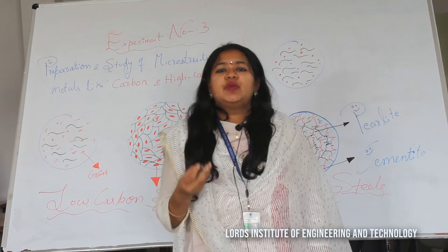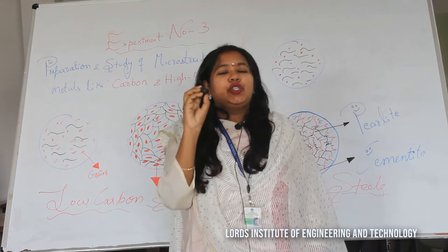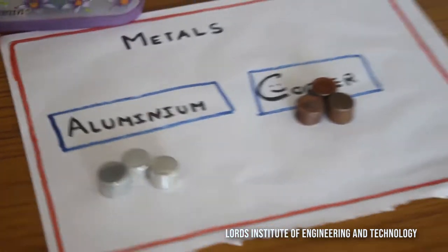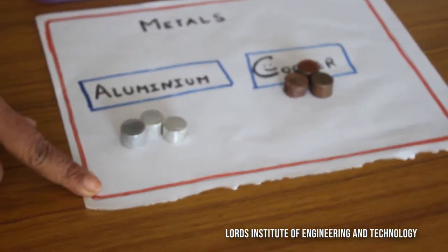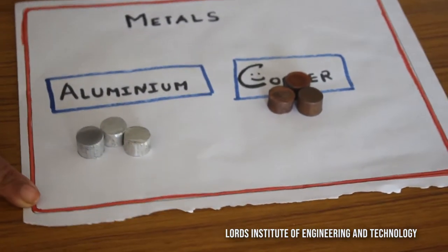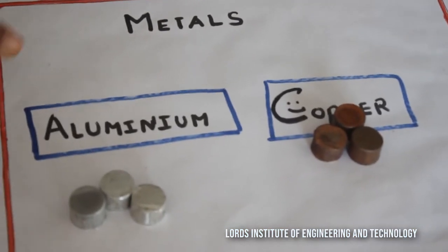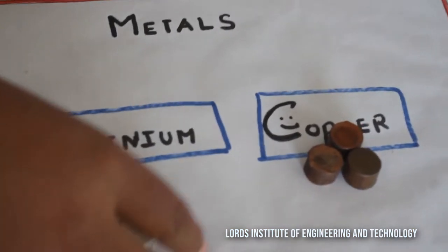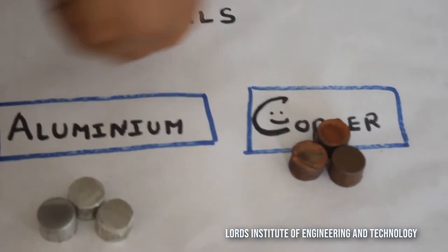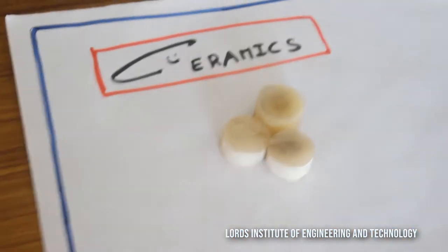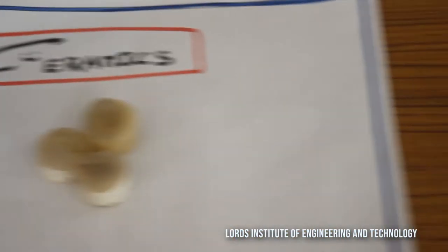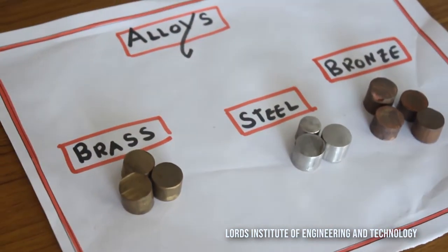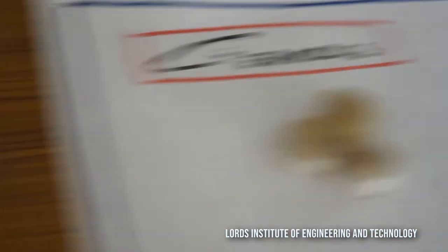Now let us see what are the different processes we are going to follow for preparation of microstructure. As I gave you the introduction to metallurgy materials and material testing lab, in this metallurgy lab you are going to focus on different metals, ceramics, and alloys. Now let us see for iron, copper, and aluminium how the microstructure is going to vary.